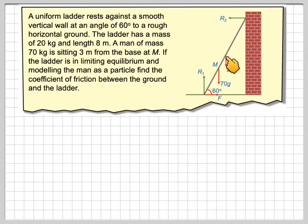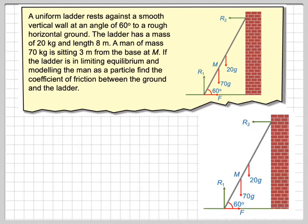The center of mass will be halfway along the ladder because it's uniform. So this will be 20G and then there's a man which is 3 meters from this point here. So, there's our diagram.